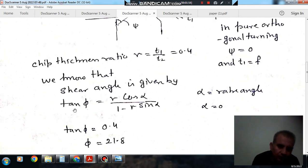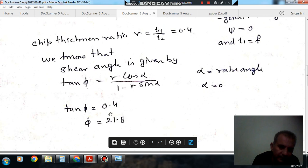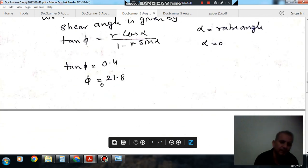So from this we have shear angle, we can find out shear angle. So tangent phi is equal to r cos alpha over 1 minus r sin alpha. So alpha is your 0, and tangent phi is your 0.4, or phi is your 21.8 degrees. That is shear angle is your 21.8 degrees.